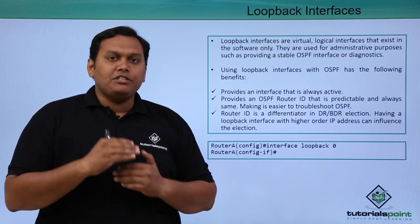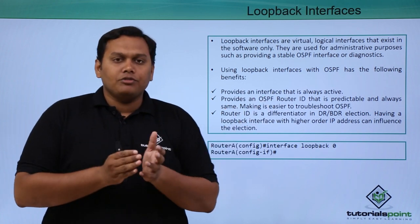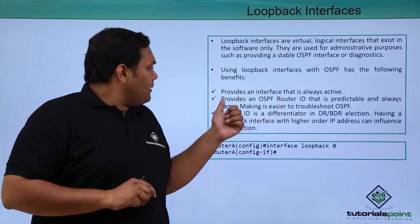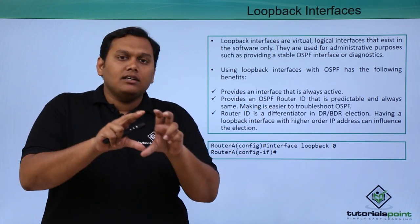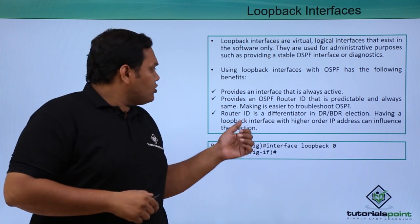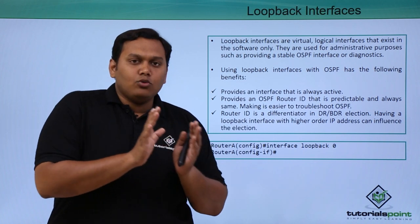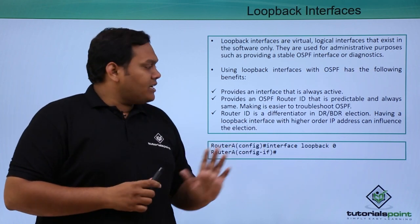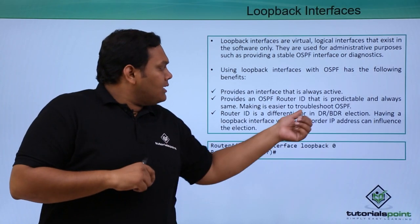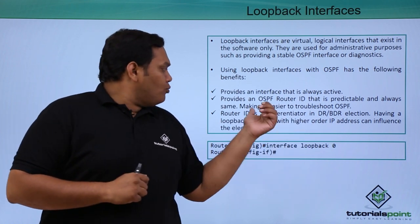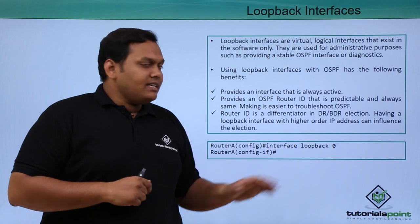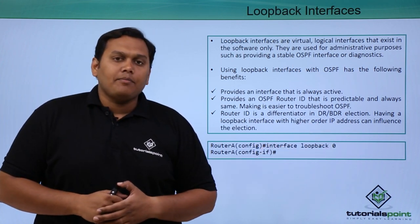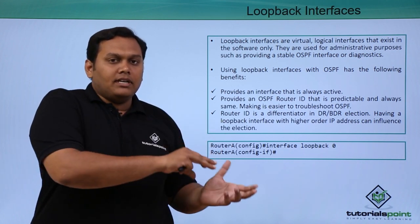Using loopback interfaces with OSPF, you get these benefits: loopback interface is always active and provides an OSPF router ID that is predictable, making it easier to troubleshoot OSPF. The loopback IP address is used in choosing the router ID, and the router ID is a differentiator in DR and BDR elections. Having a loopback interface with a higher order IP address can influence the election, as the highest IP address is used in electing the DR and BDR.